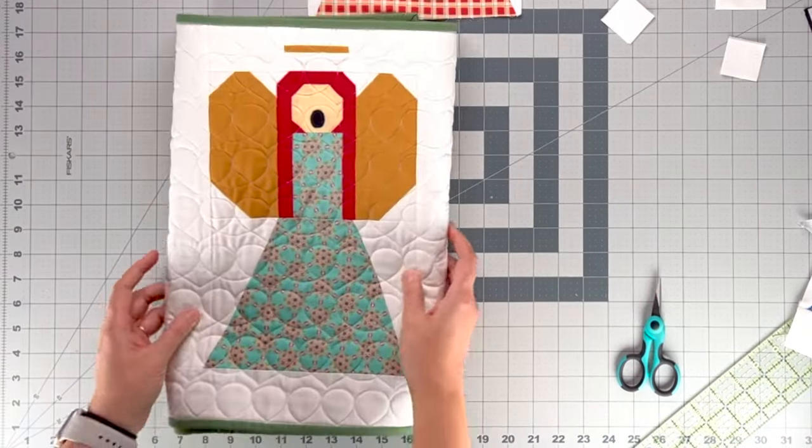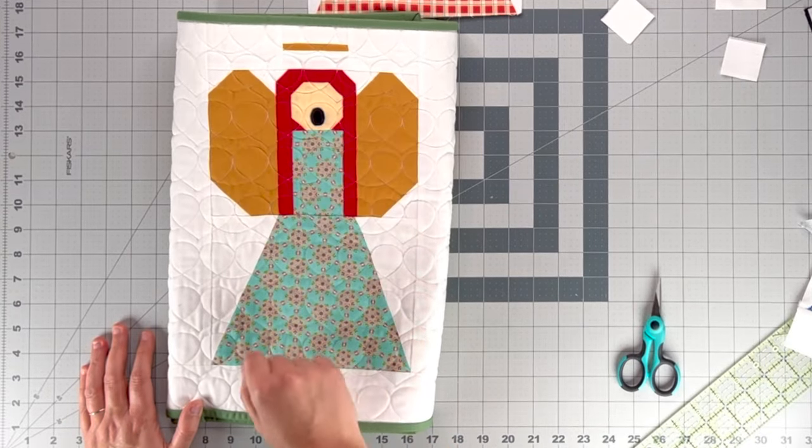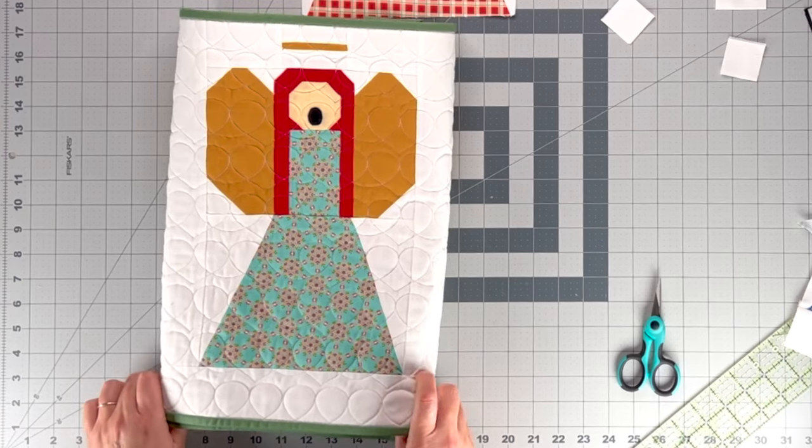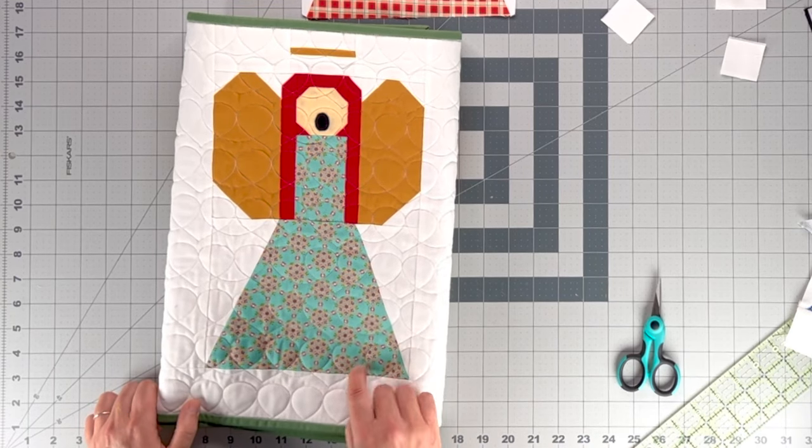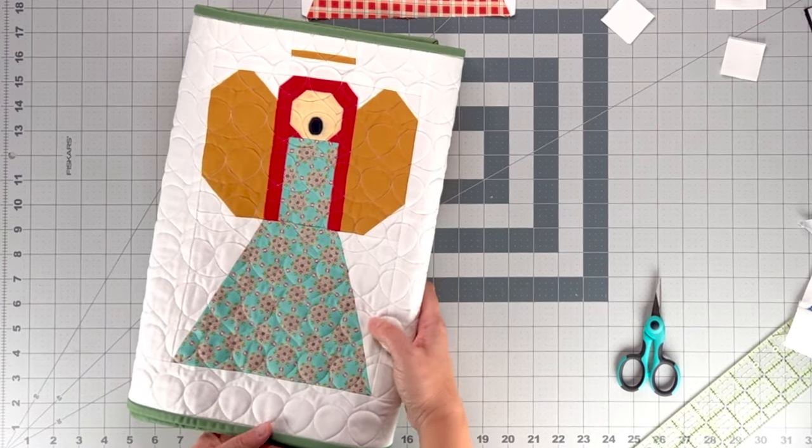And then for our table runner, we're going to do a little mouth on each angel that's singing. So this is the Angelic Choir table runner, and we're going to do a black applique for that.